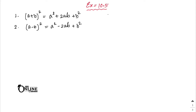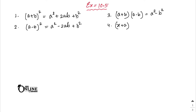The third identity: (a + b)(a - b) = a² - b². The fourth identity: (x + a)(x + b) = x² + (a + b)x + ab.